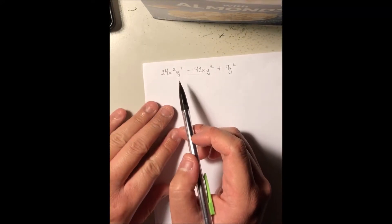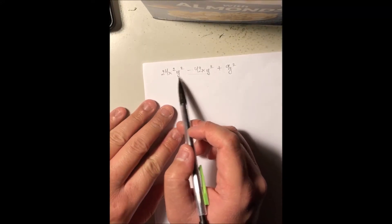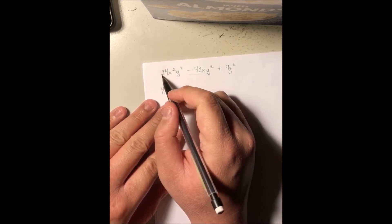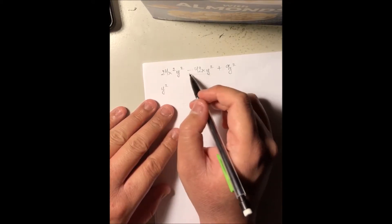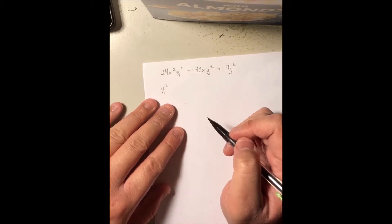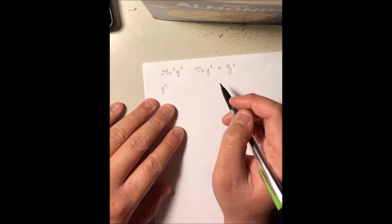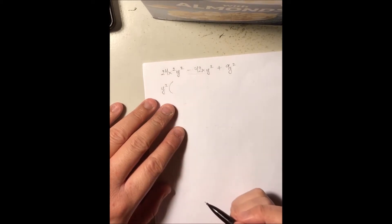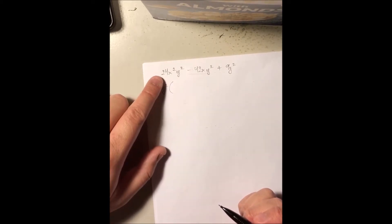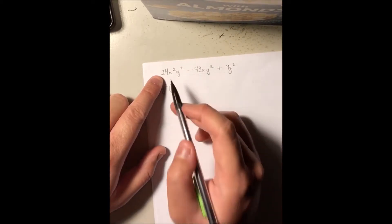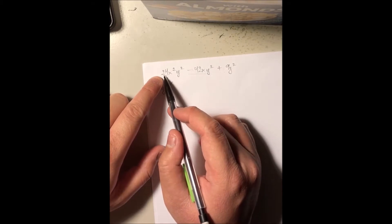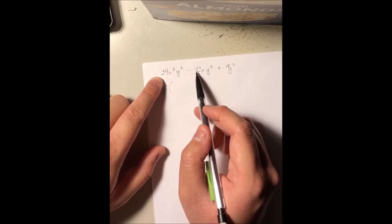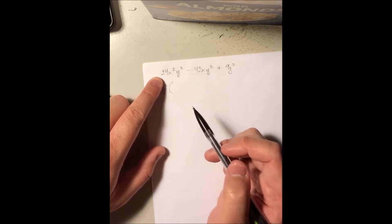The first thing we can see right away is that we can factor out the y squared. We factor it out because y squared goes with the coefficients 24, negative 42, and positive 9. We cannot factor out x because coefficient 24 has x squared, coefficient negative 42 has x, but coefficient 9 does not.